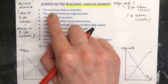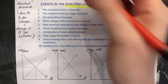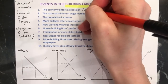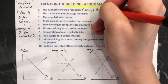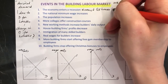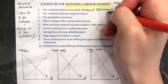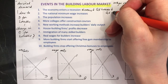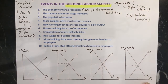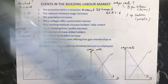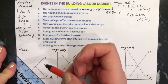The first situation: the economy enters a recession. If we're in a recession, that means that people's incomes go down. That means that the quantity demanded of houses goes down. And if fewer houses are being demanded, then the quantity demanded of building labour is going to go down. If we have a decrease in the quantity demanded, demand shifts to the left — remember, left is less.